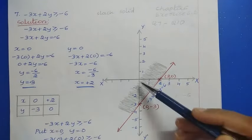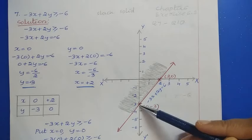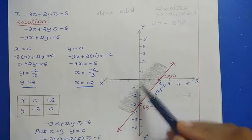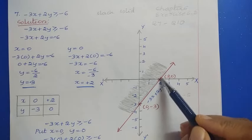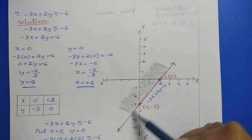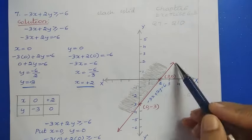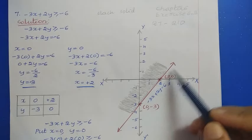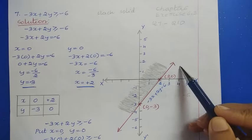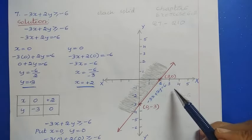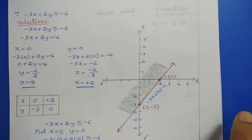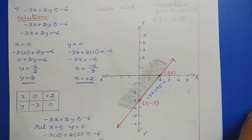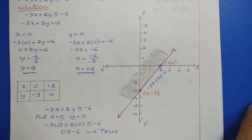Locate the points on the plane: (0, -3) and (2, 0). Draw a solid straight line through these two points. After drawing this straight line, we need to determine which area to shade.